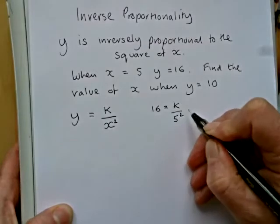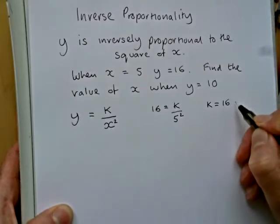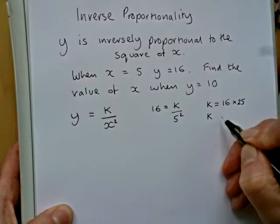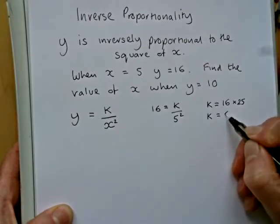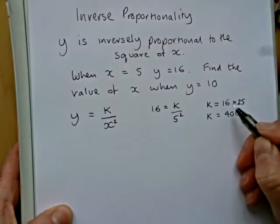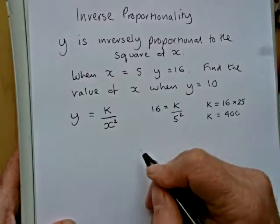16 equals k over 5 squared. So, k equals 16 times 25. And 16 times 25 is 400. Four 25s make 100. You've got four 4s in 16. You'll get 400. So, we now know that k is 400.